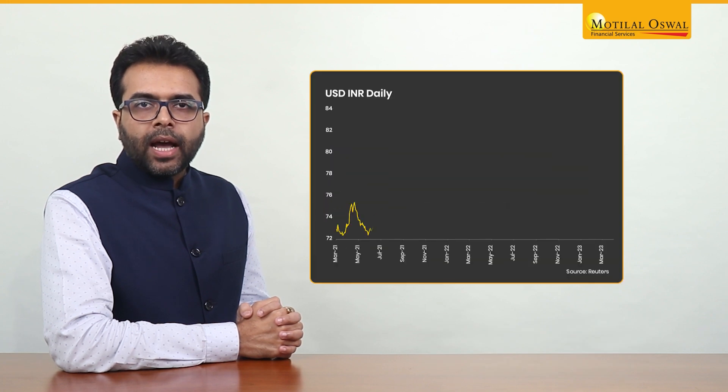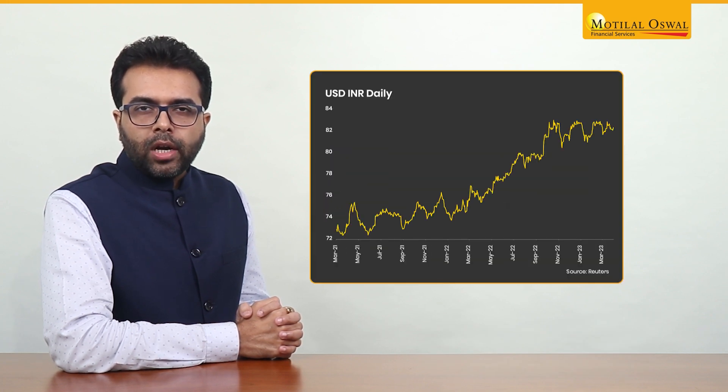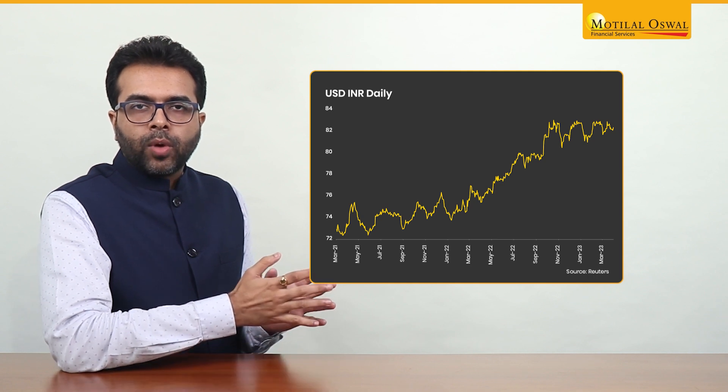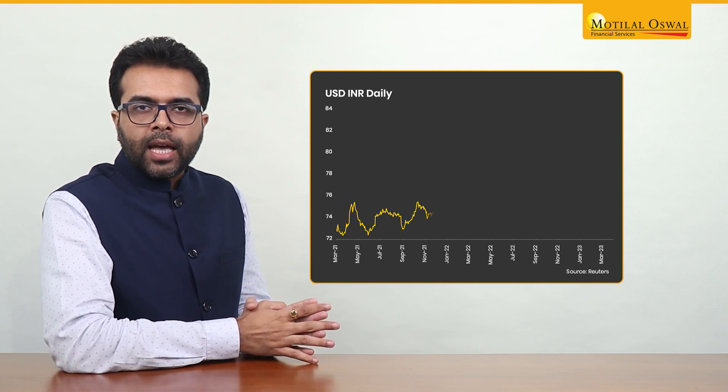We have seen that the dollar-rupee pair has been stuck in a narrow range. Volatility has been quite low and the range has been confined to 81.80 on the lower side and 83.05–83.20 on the higher side has not been taken out.